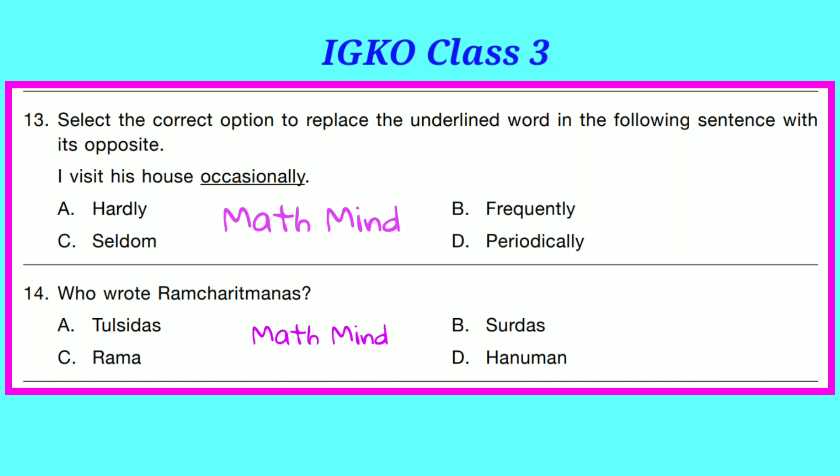Question No. 13. Select the correct option to replace the underlined word in the following sentence with its opposite: 'I visit his house occasionally.' The underlined word is 'occasionally.' Its opposite is 'frequently.' So Option B is correct.